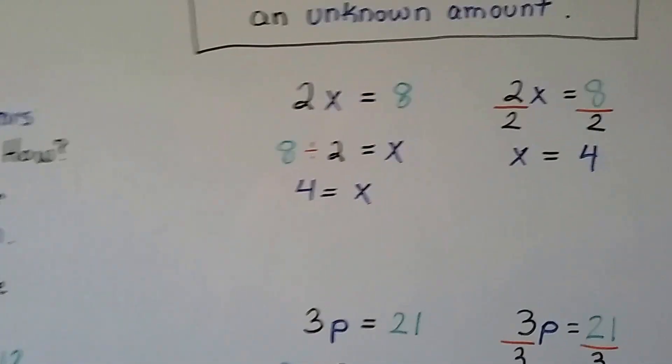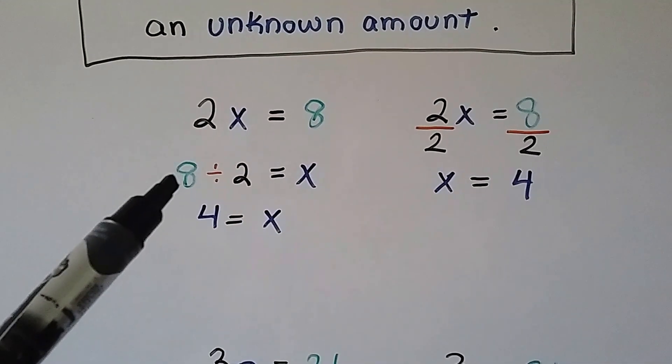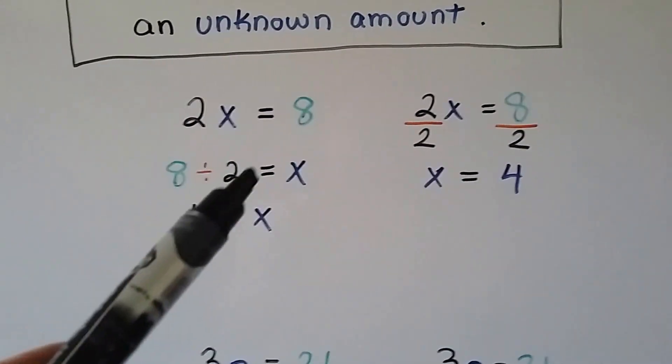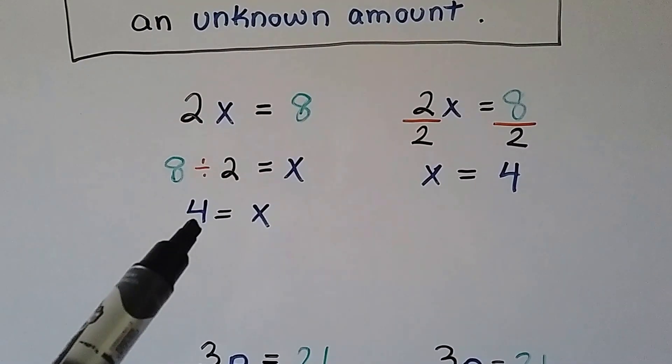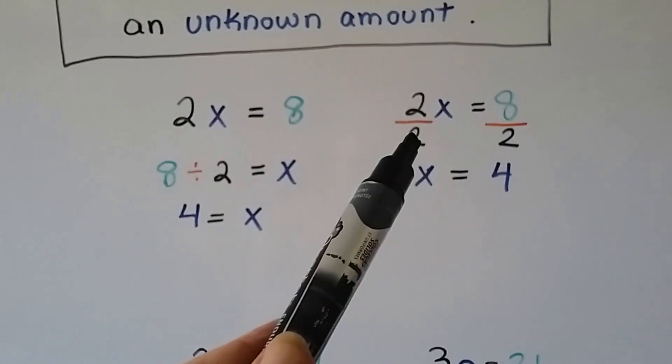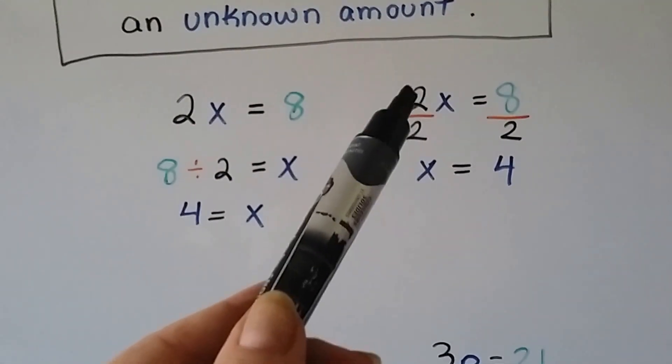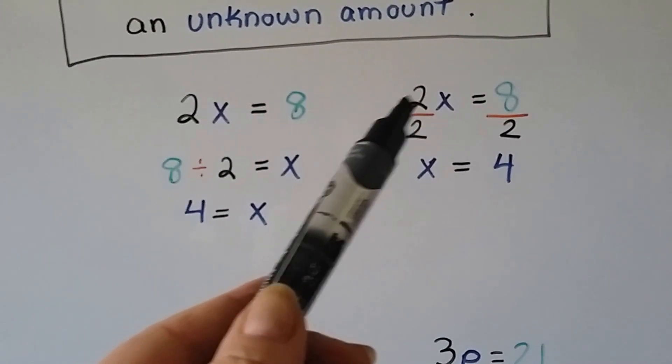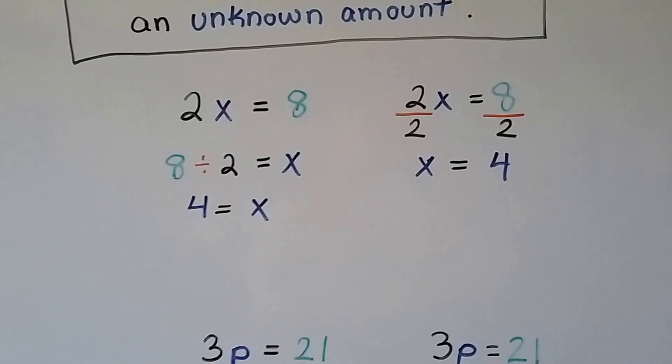We've got 2x equals 8. We can reverse this as 8 divided by 2 equals x and know that it's a 4. But we can draw a fraction bar, divide both sides by this coefficient 2. We always do it by the number that is next to the variable, not the product.